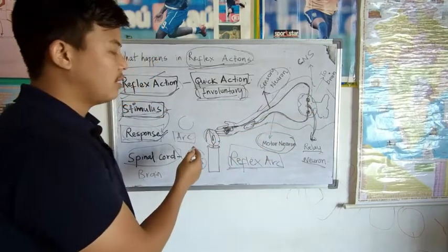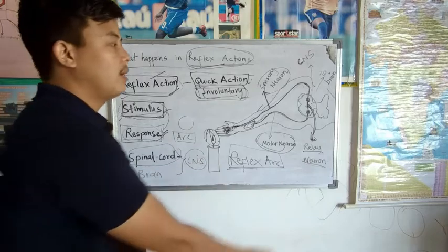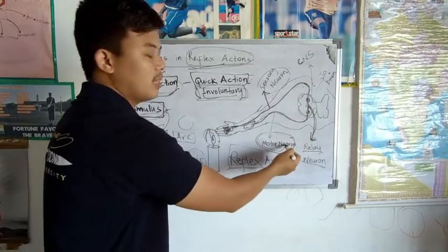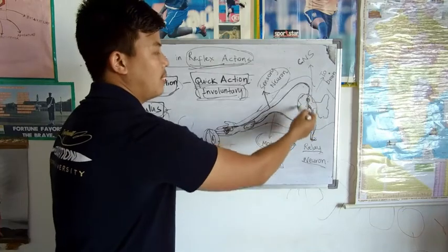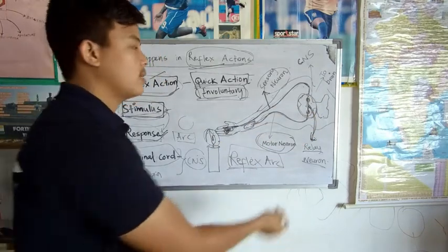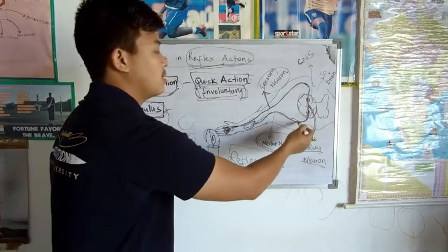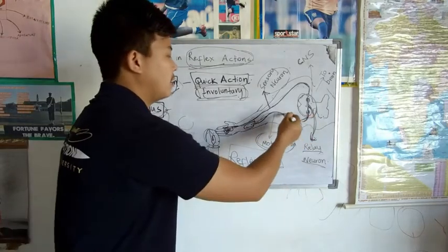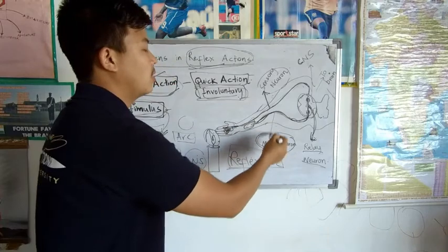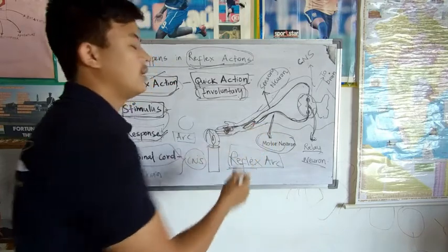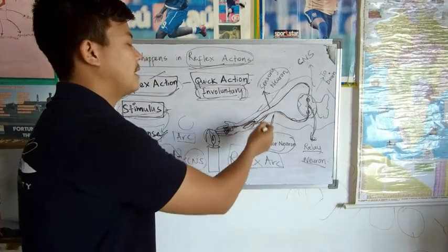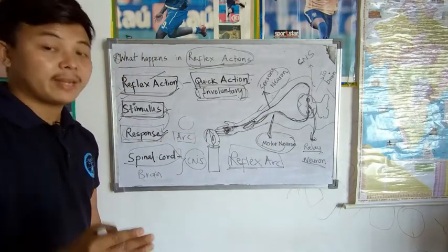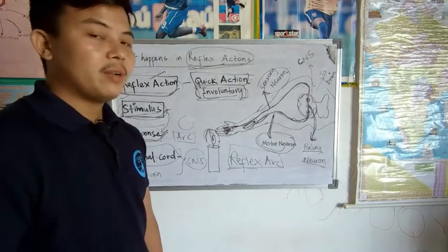To summarize: the sensory neuron carries the signal from the external environment; the relay neuron makes connections between the sensory neuron and the motor neuron; processing takes place in the spinal cord; and the processed signal is sent back to the motor neuron so the effector muscle acts accordingly. This is how we pull our hand back very quickly.